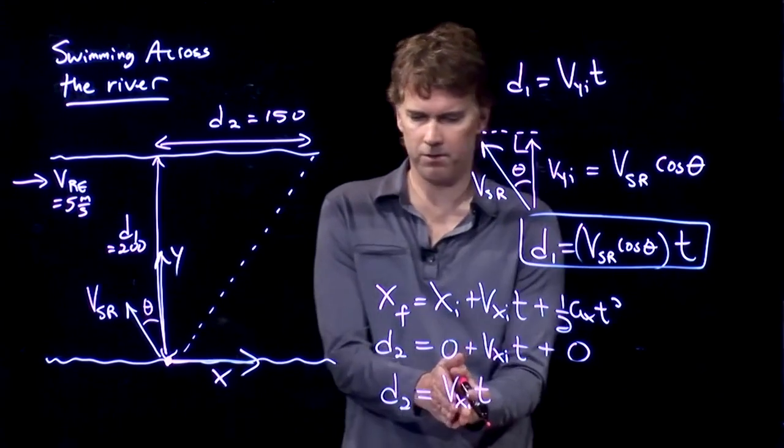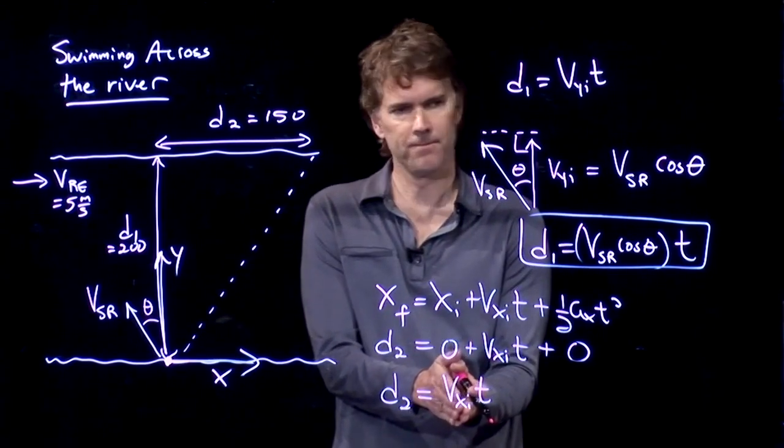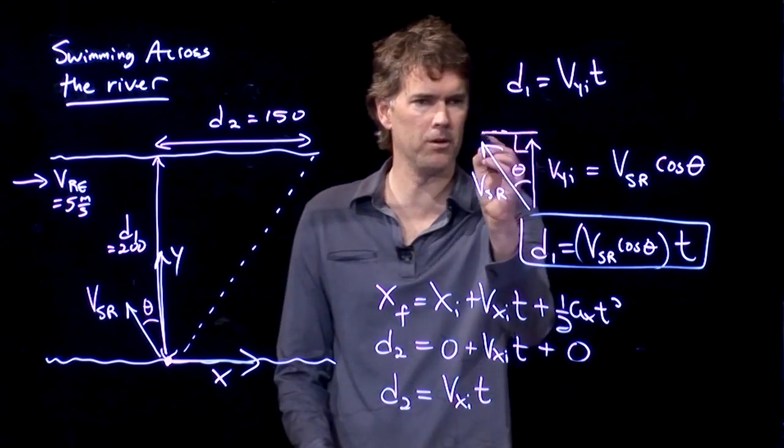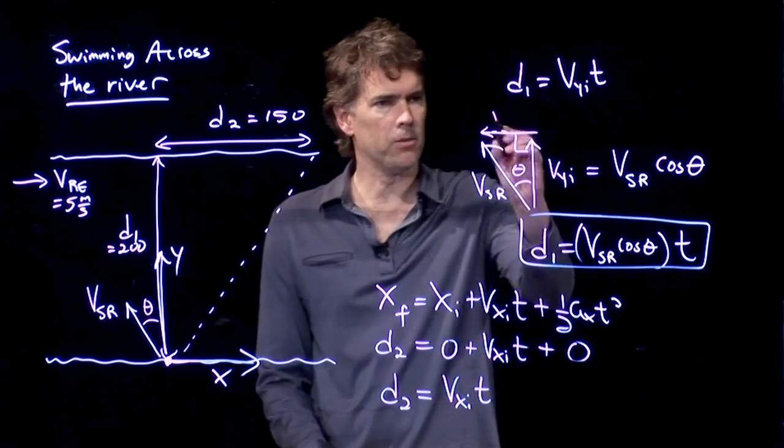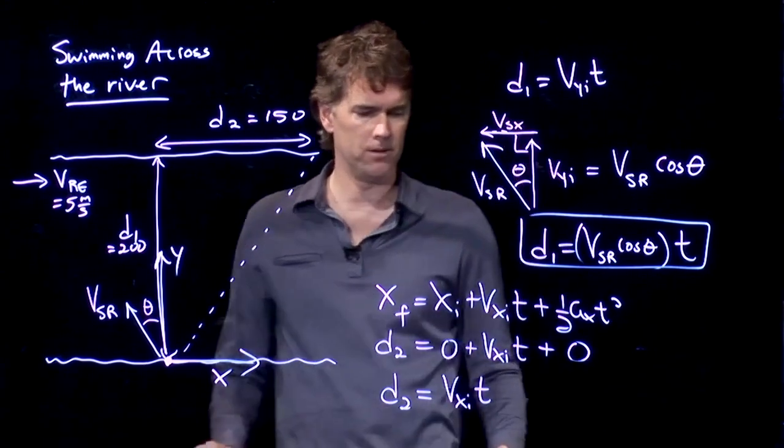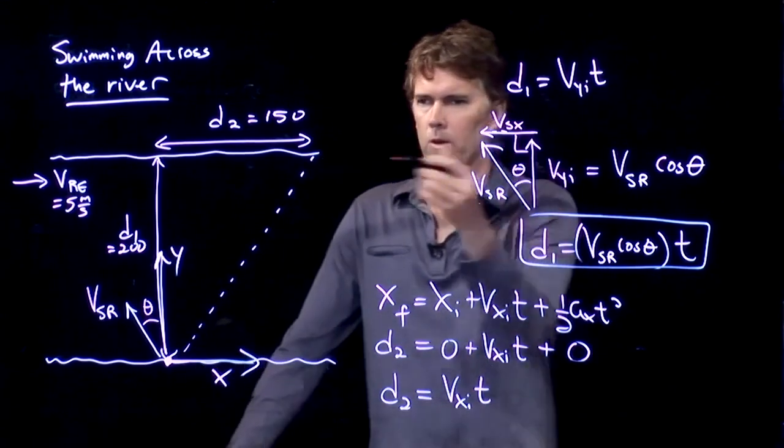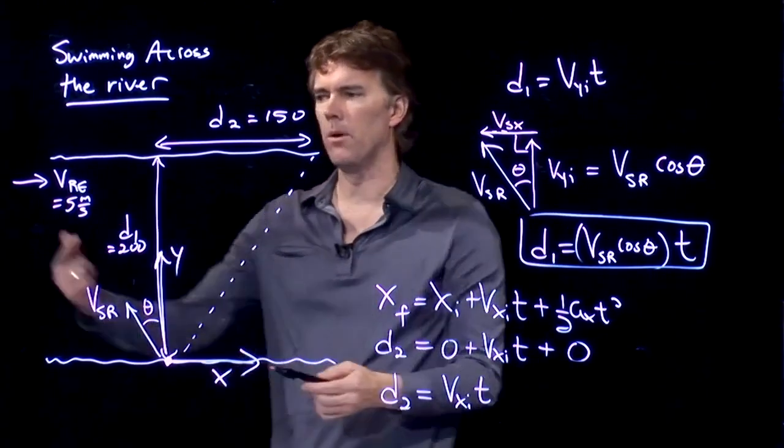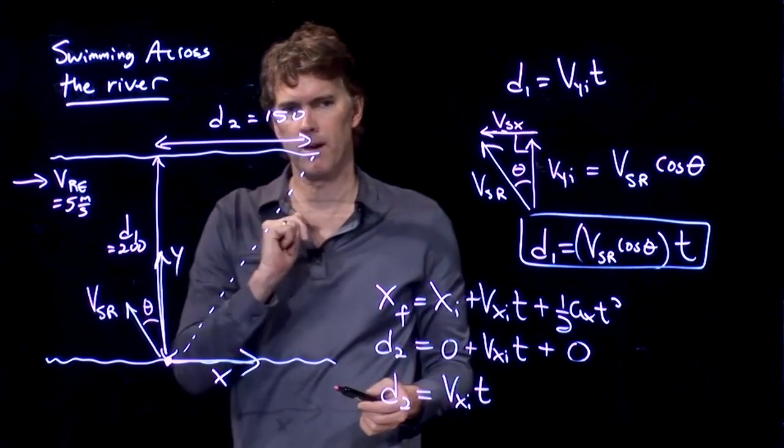And now we have to think about this v xi. We just drew a triangle up here which had the swimmer, and this was v of the swimmer in the x direction. But that's not the only thing moving in the x direction. The swimmer has some component up that way, but the river has some component that way.